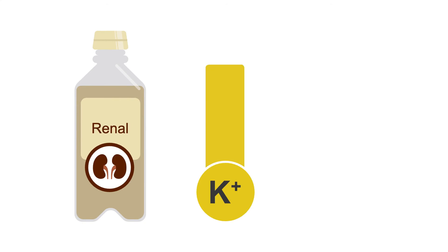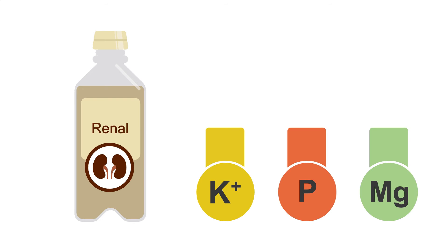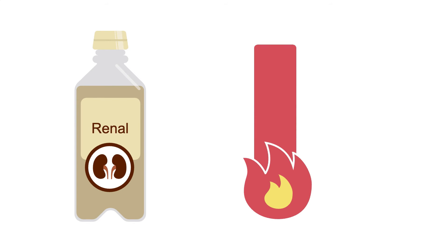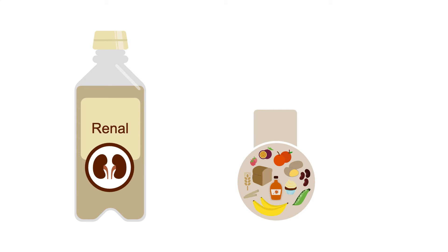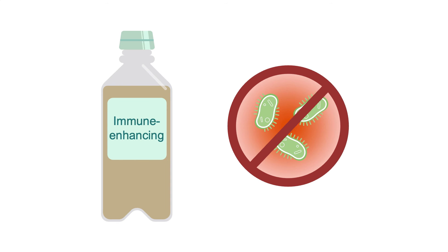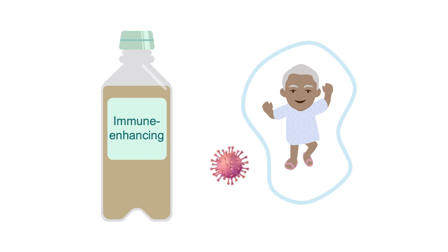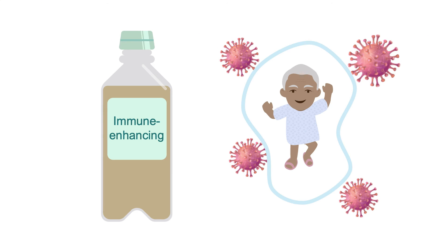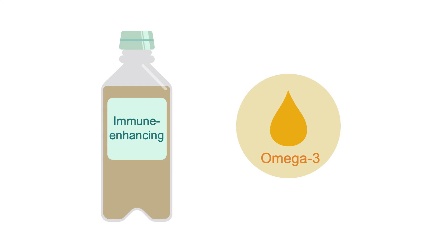Renal formulas are low in potassium, phosphorus, and magnesium, and are often high calorie density to minimize total volumes needed. They may also be carb-controlled, as patients with kidney disease often have concurrent diabetes. Immune-enhancing formulas aim to reduce complications associated with infection and protect and stimulate the immune system. They can contain a variety of different nutrients, such as omega-3 fatty acids, that are thought to help regulate the body's response to illness and injury. Research is still developing in this area.